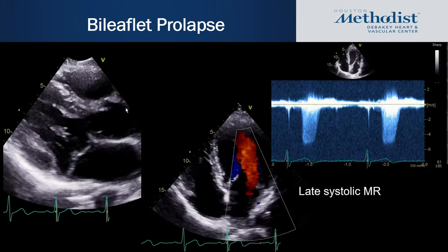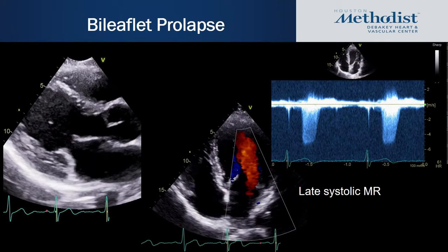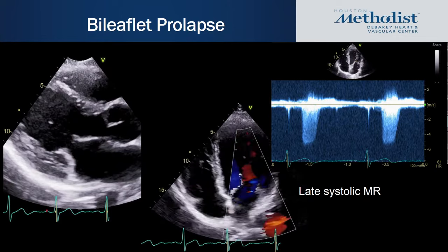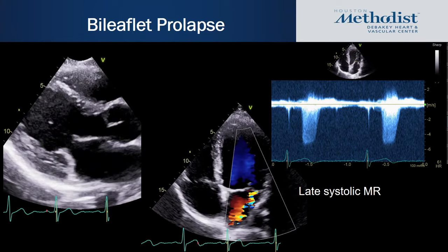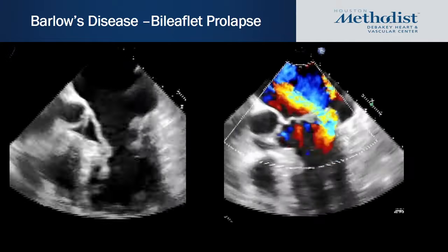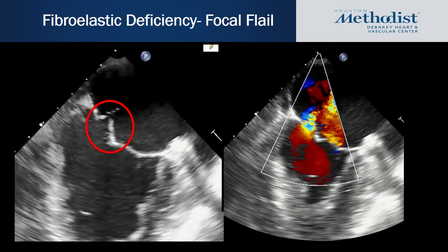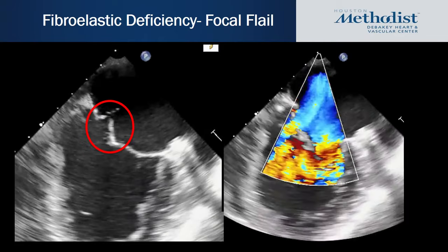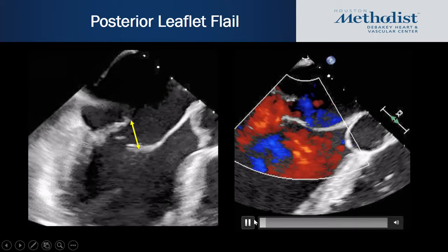Among phenotypes of primary MR, bileaflet mitral valve prolapse is best assessed on the parasternal long axis view. This can result in late systolic MR — in early systole there's little regurgitation, and towards end systole is where you develop the regurgitation, so determining the timing is very important. Another phenotype is fibroelastic deficiency, which usually leads to a focal flail where the leaflets are otherwise thin and not myxomatous.